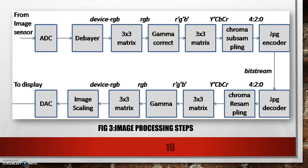The image processing steps are: from the image sensor, the analog signal is converted to digital; then it goes through demosaicing (DBAIR); then a 3x3 matrix; gamma correction; another 3x3 matrix; chroma subsampling; JPEG encoder; JPEG decoder; chroma resampling; another 3x3 matrix; gamma correction; a final 3x3 matrix; image scaling; digital-to-analog conversion; and finally display output.